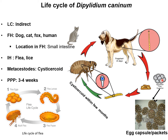The larval stages of the flea are infected after ingestion of these eggs containing the hexacanth embryo. In both flea and lice, the cysticercoid develops in their body cavity within a few months. Then dog and cat become infected after ingesting fleas or lice carrying the cysticercoid.